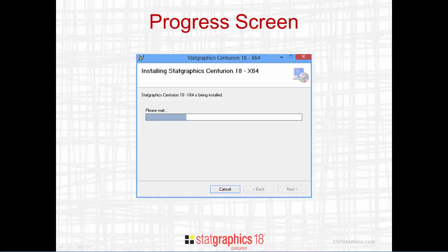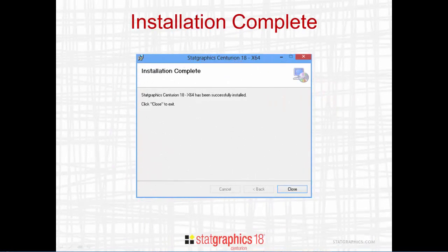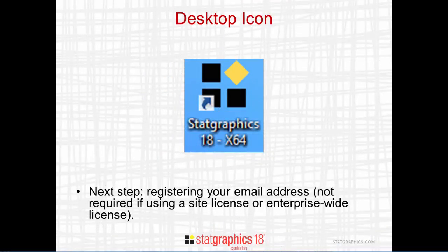A dialog box with a progress bar will then appear and show you how the installation is proceeding. It should only take a couple of minutes to install StatGraphics 18 on your computer. Once the installation is complete, you'll see the final dialog box — go ahead and press Close. Once StatGraphics 18 is installed on your computer, an icon similar to this will be shown on your desktop. It's then time to take the second step, registering your email address, which is the subject of a second video.